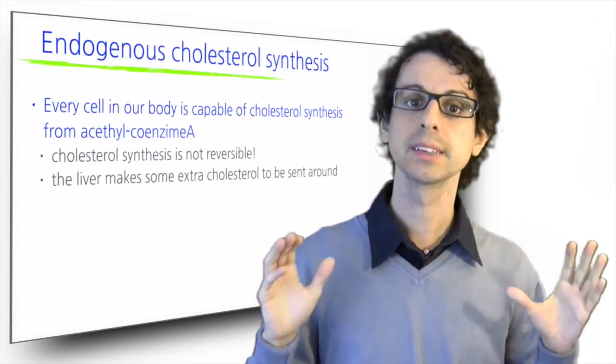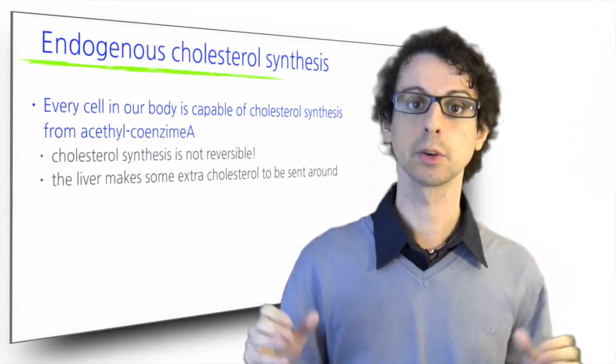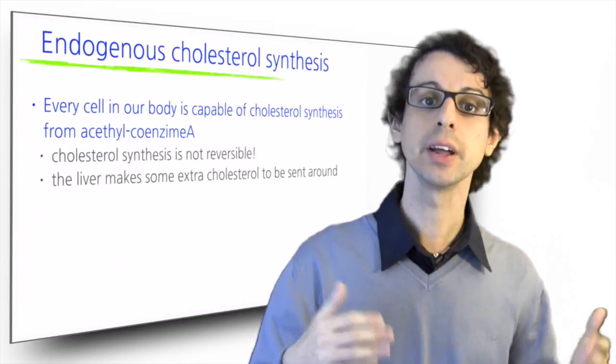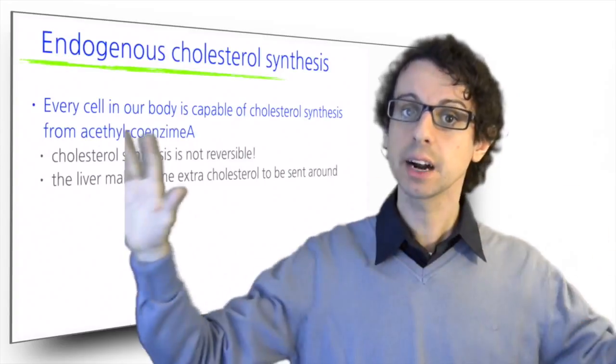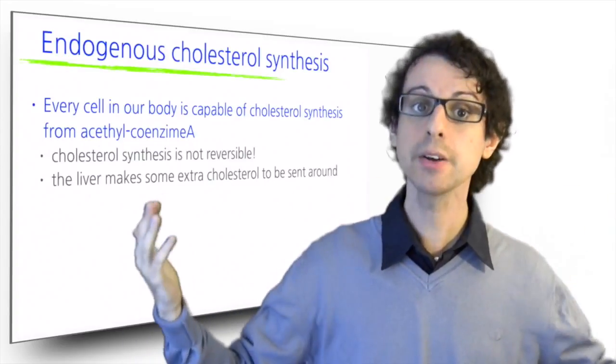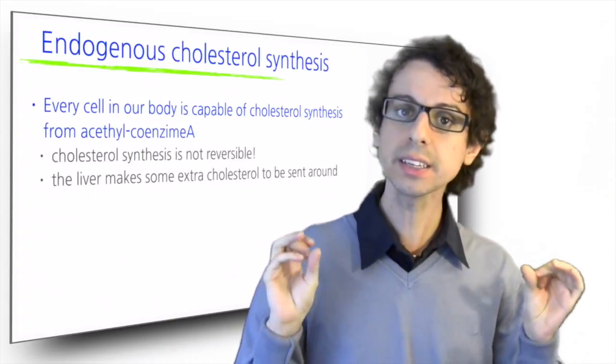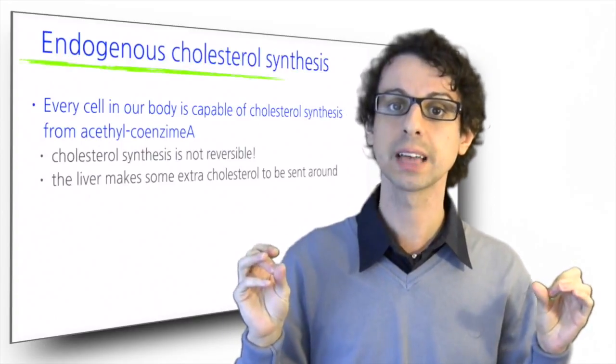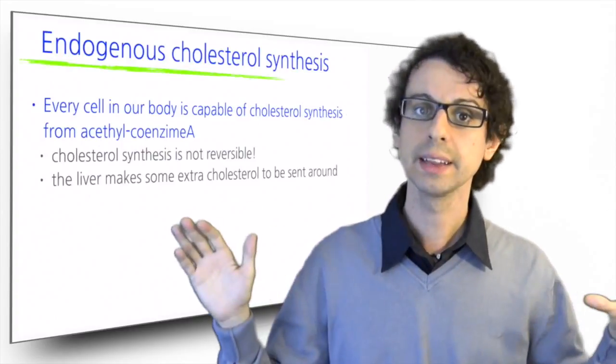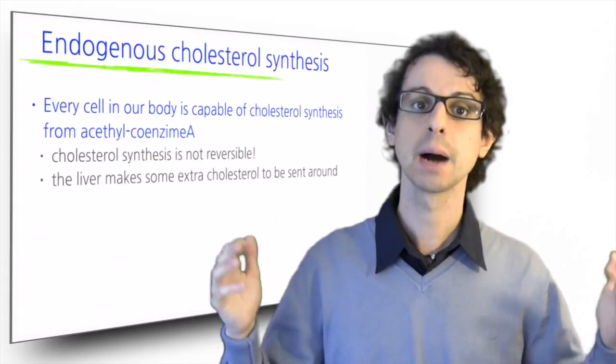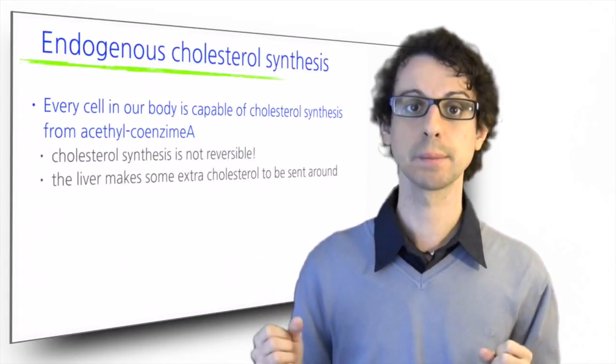Every cell in our body is capable of cholesterol synthesis for its own use, while the liver can make cholesterol and send it around in the circulation for other cells to use. The starting material is acetylcoenzyme A, which is usually readily available in every cell and can come from fatty acids, glucose, and some amino acids.